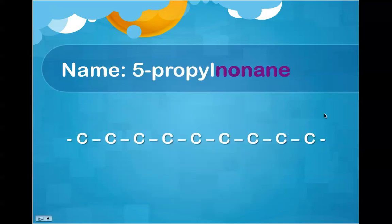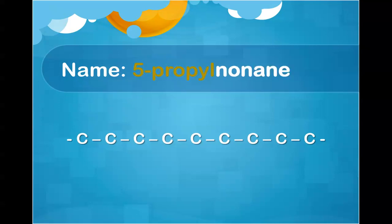Looking at our last one in this section: 5-propylnonane. The NON prefix indicates nine carbons. I am then going to, on my fifth carbon, show a propyl group — three carbons indicated by the prop prefix — with the correct number of hydrogens attached.